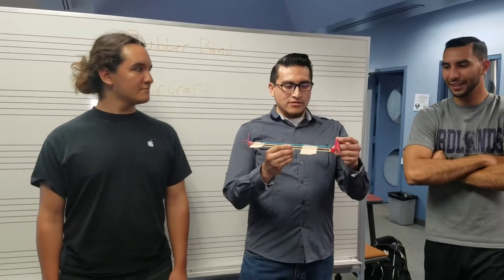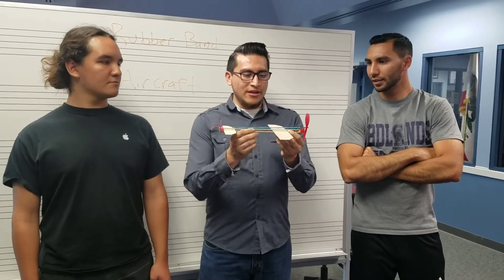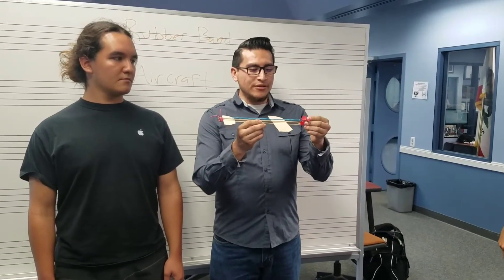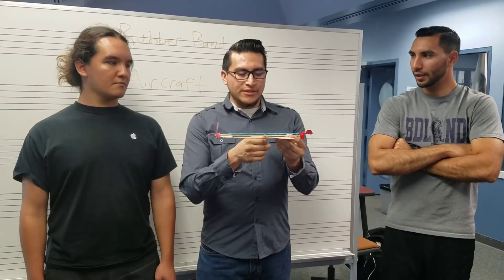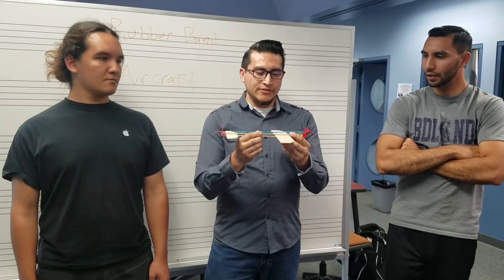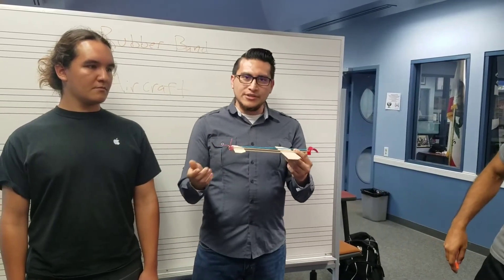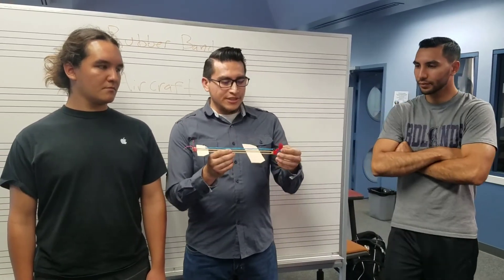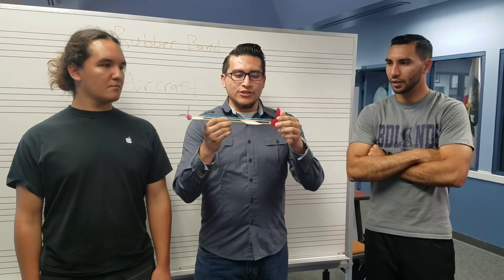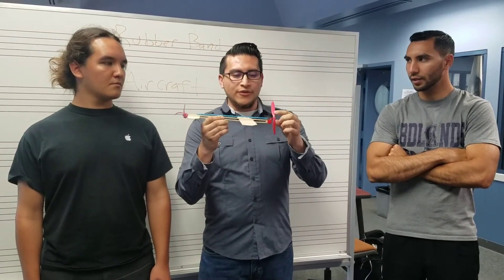How to build it: basically what we did is we got a balsa wood kit from your local hobby shop, and we also got wood dowels, the rubber band, and a propeller. What we basically did is we just measured it out based on a design that we saw on a YouTube video, and we made it our own, built upon that design. We based our measurements on the tension of the rubber band — the more tension that was made in the rubber band, the further the distance it traveled.